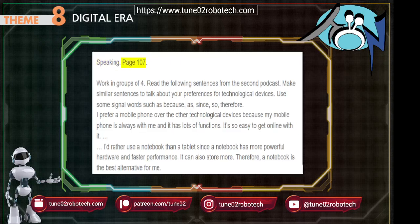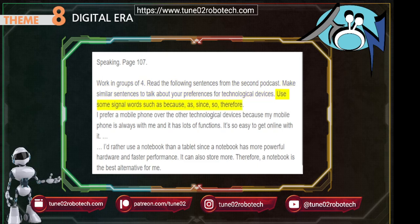Speaking. Page 107. Work in groups of four. Read the following sentences from the second podcast. Make similar sentences to talk about your preferences for technological devices. Use some signal words such as: because, as, since, so, therefore.